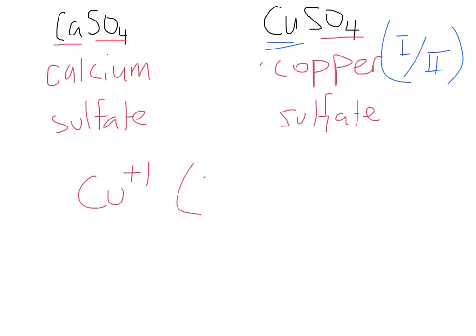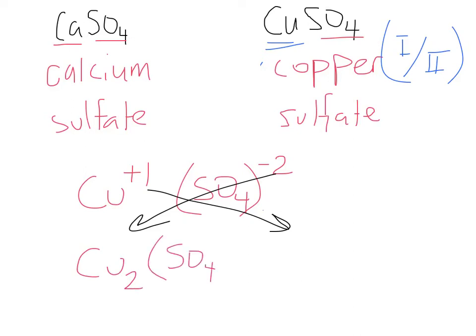What's the charge for sulfate? SO4? Negative two. So if I cross over, cross this over, remove the charge. So I remove the charge. So I've got Cu2, brackets SO4, and a one. Because I have a one out here, do I need these brackets? No. So I'm going to remove the brackets. Now the thing is, doing all this is pointless. Why?